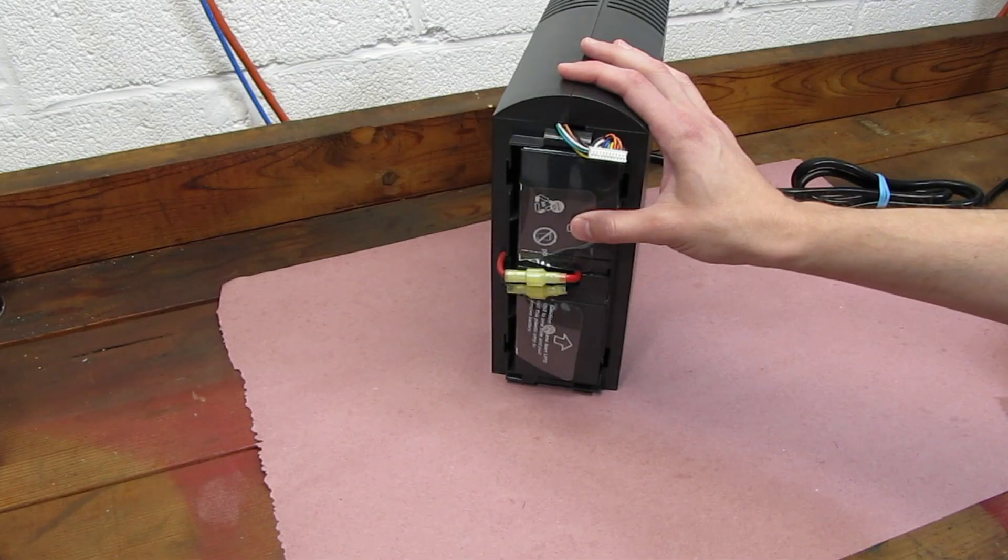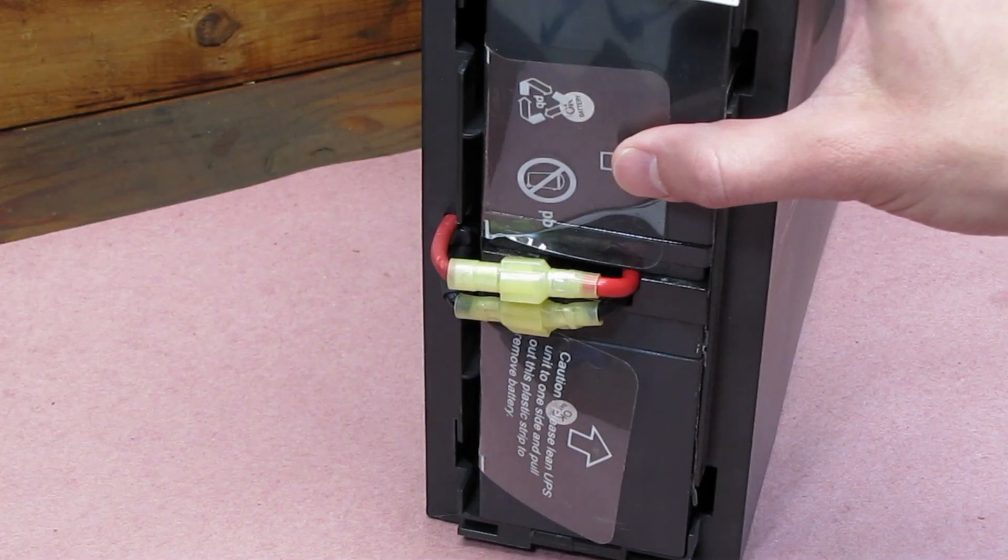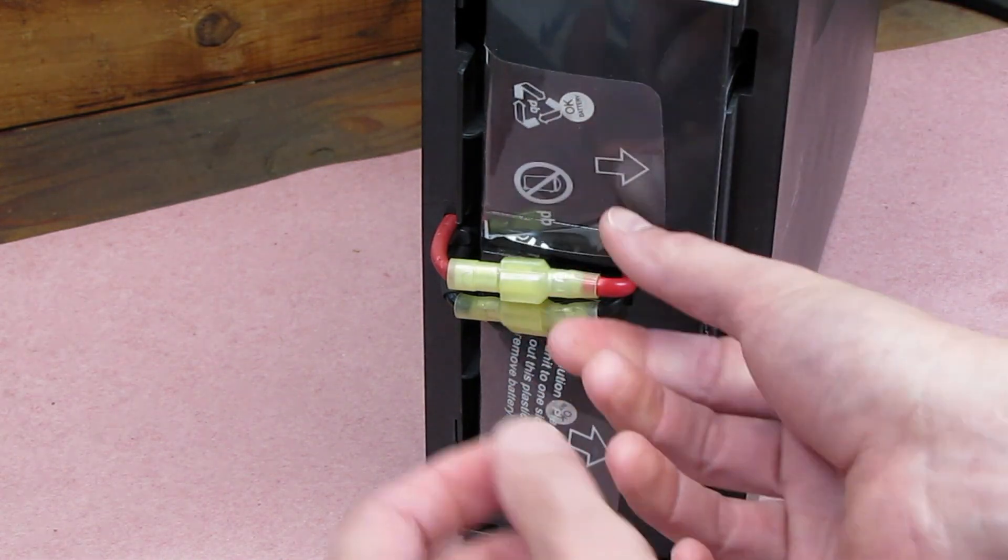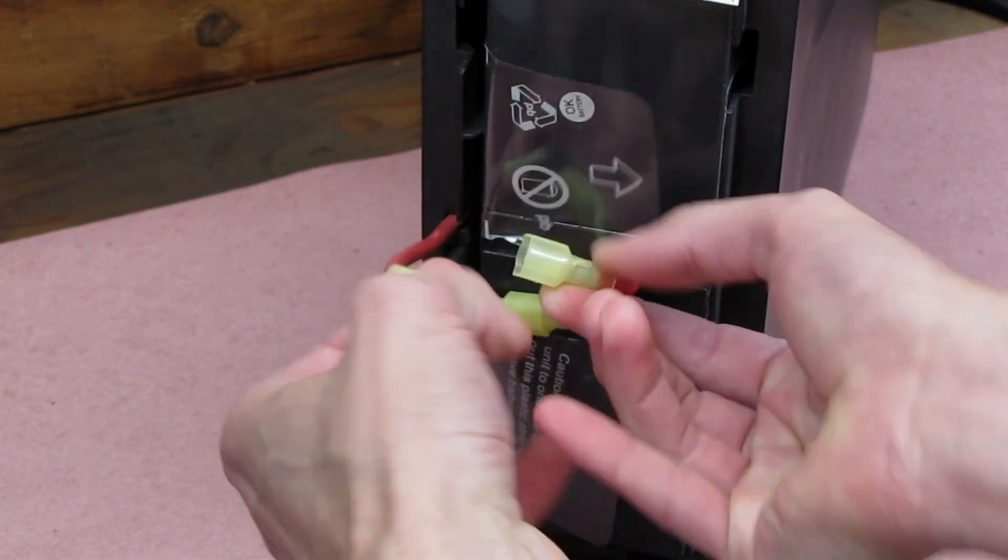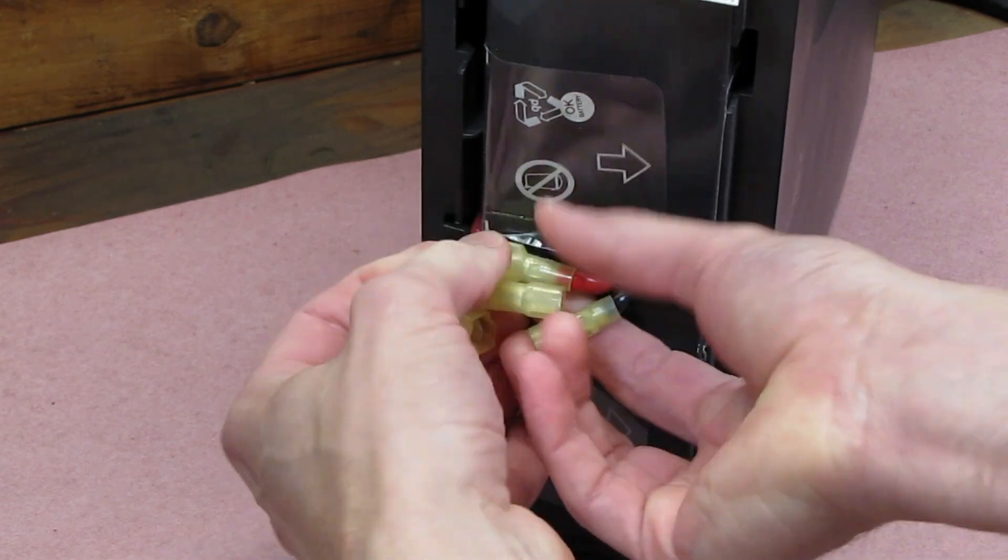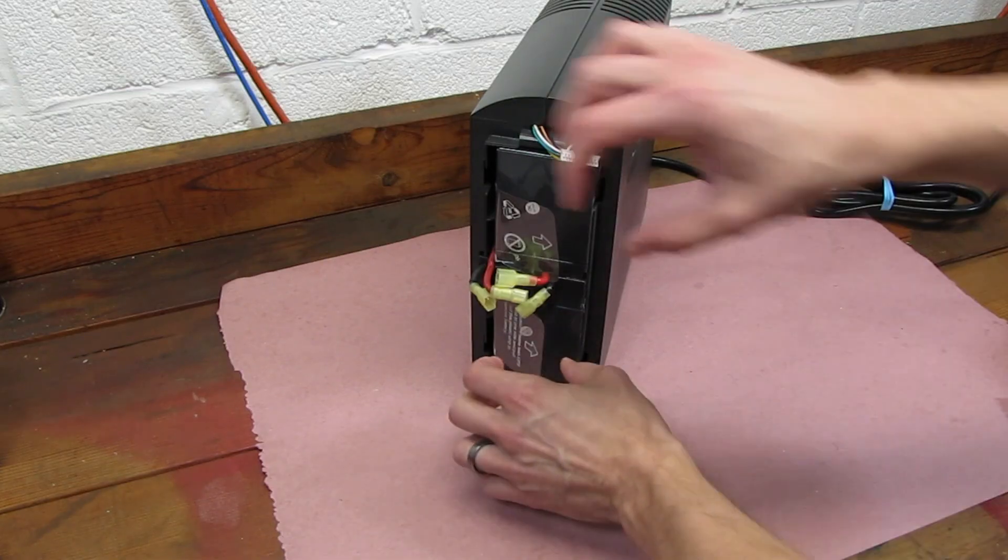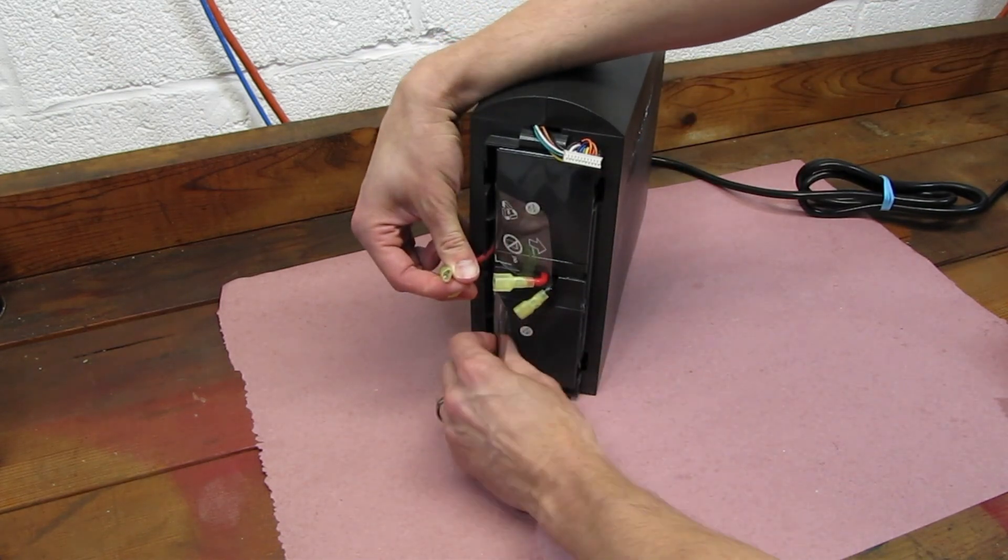To get out the battery pack, we're going to have to disconnect the batteries at these two connectors. Grab each side of the connector and pull. They should come apart. Don't grab the wires directly. Now we can grab the plastic tabs on the batteries. And being careful of these wires, slide the battery pack out.